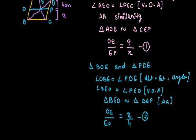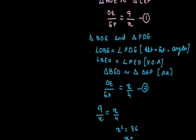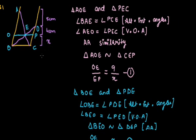Now we see that the left-hand side of both equations are equal, so we can compare them. Comparing both equations, we get 9/x = x/4. On cross multiplying, we get x² = 36, and x = 6 centimeters. So the height of the intersection point of both ladders to the ground comes out to be 6 centimeters.